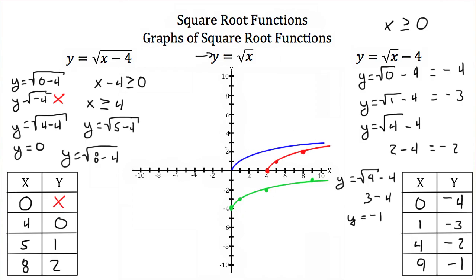What's important to notice is that when the minus 4 was underneath the square root sign, that produced a horizontal translation — the graph shifted 4 units to the right. When the minus 4 was on the outside, that gave us a vertical translation of 4 spaces down. So adding or subtracting a constant under the square root causes a horizontal translation, while adding or subtracting outside causes a vertical translation.